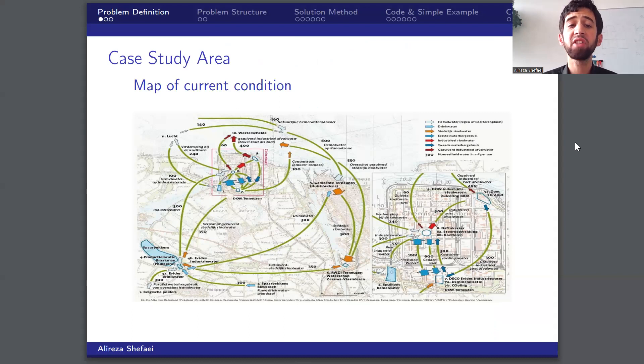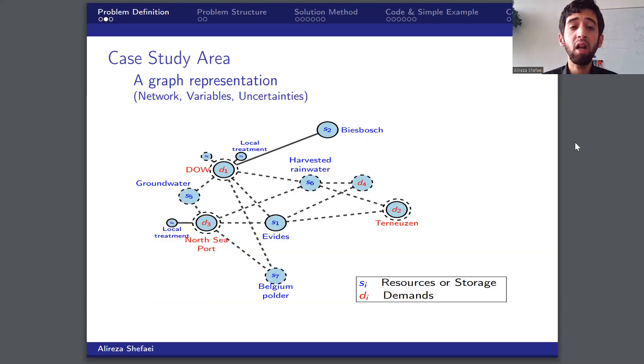This area has different challenges regarding the availability of resources for its different growing types of demand. However, changing climates are expected to aggravate these problems. I modeled this network using a graph in which junctions represent supply and demand points, also transfer nodes, while the edges indicate pipelines and pump stations.